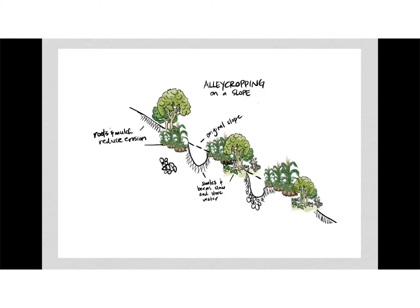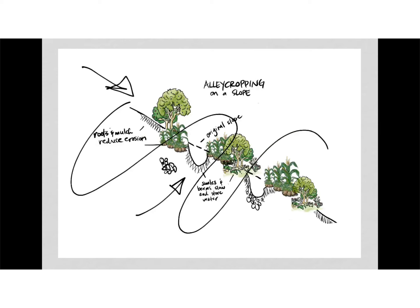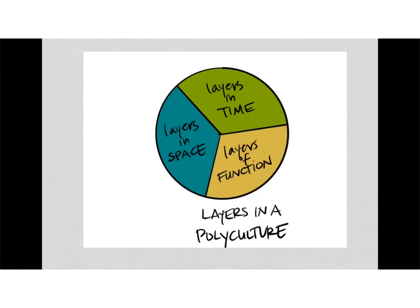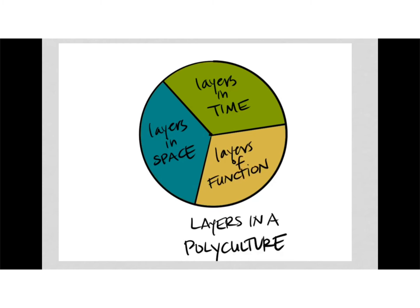Now on a slope sideways, this is what it would look like. These are your swales. Your water comes in and percolates through and down. Ideally, you send the water back and forth across the slope as it goes down. You've got your berms, you've got your swales, and you've got your mixed polycultures and guilds to create your system. To review: layers in a polyculture — layers in time, layers in space, and layers of function.